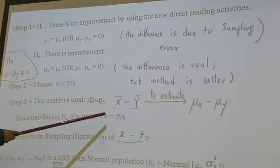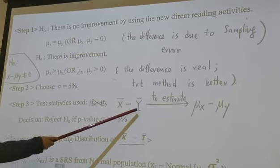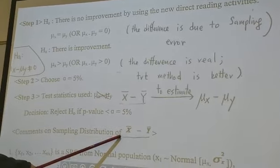In order to make inference based on this statistic, x̄ minus ȳ, we need to talk about the sampling distribution of x̄ minus ȳ.